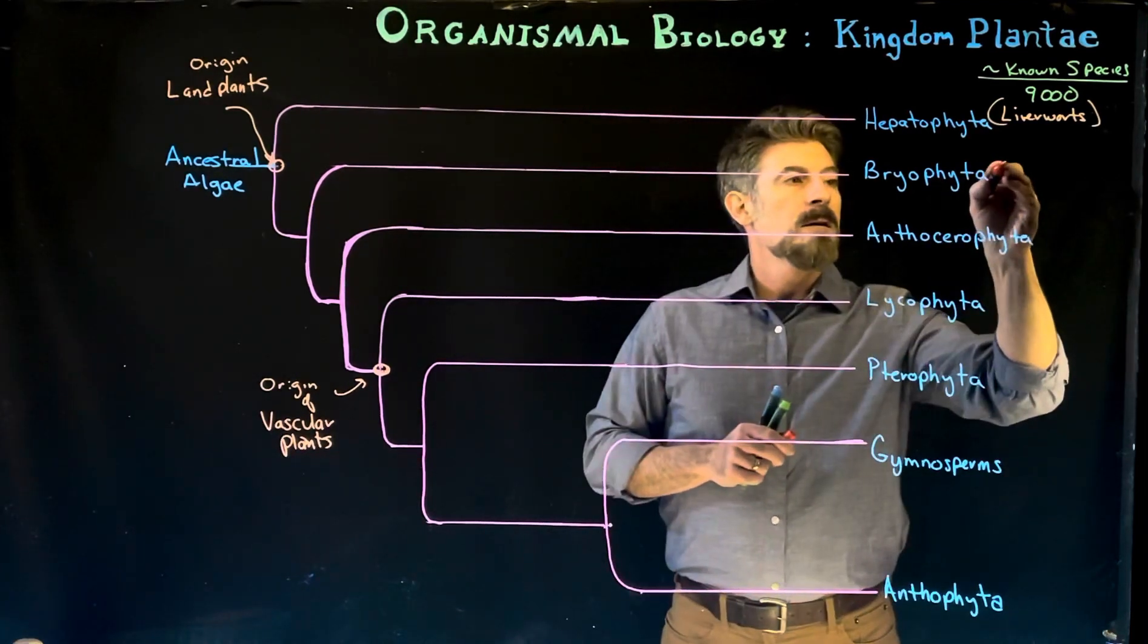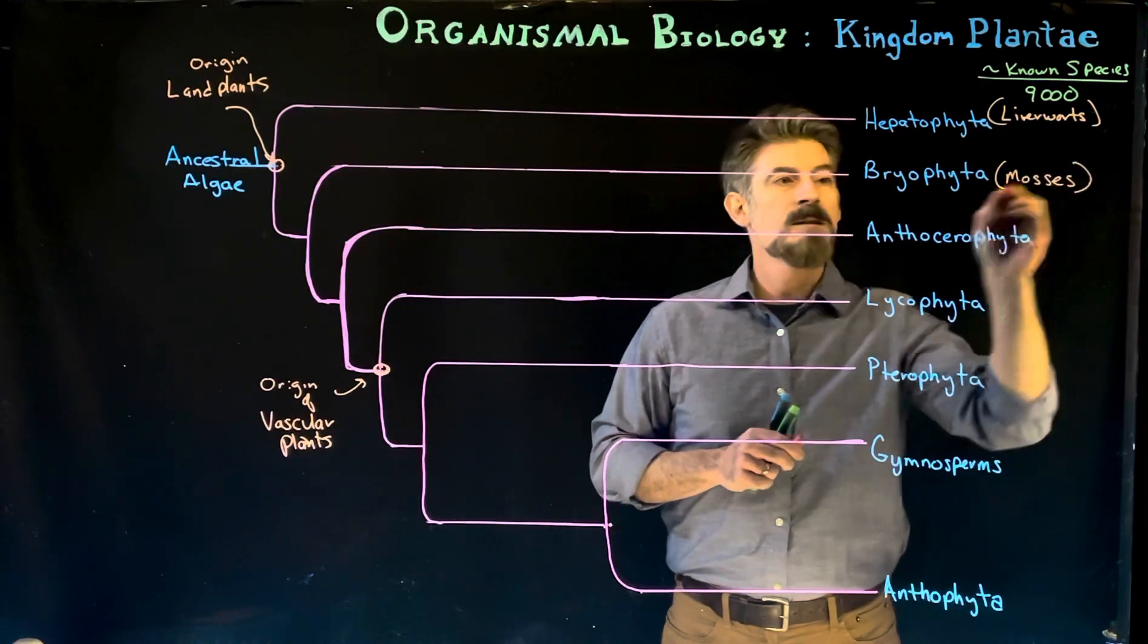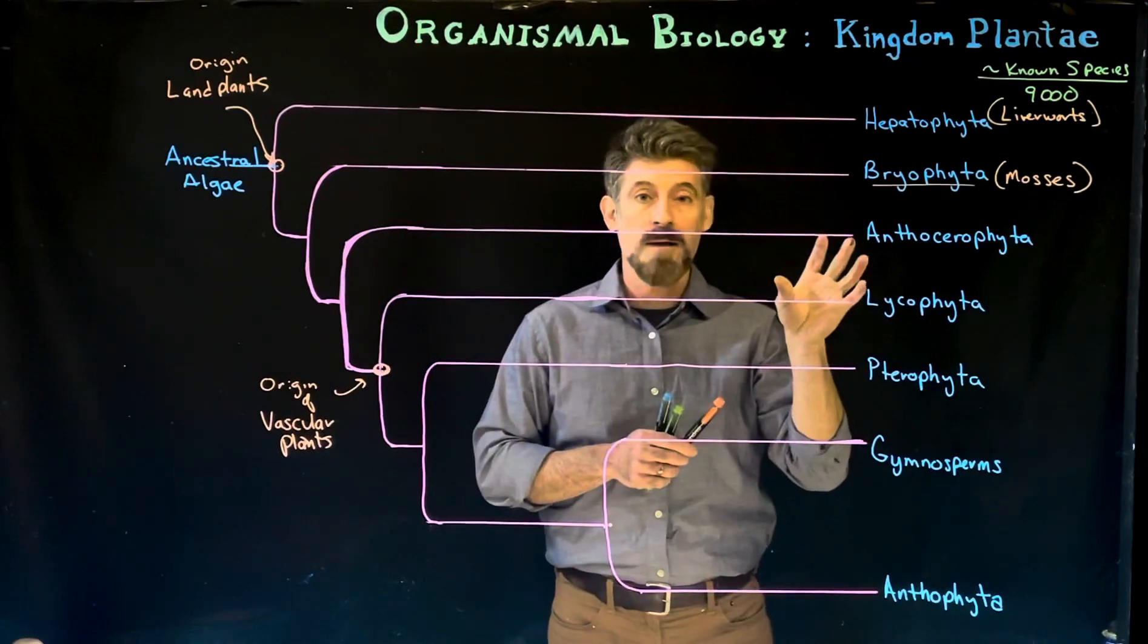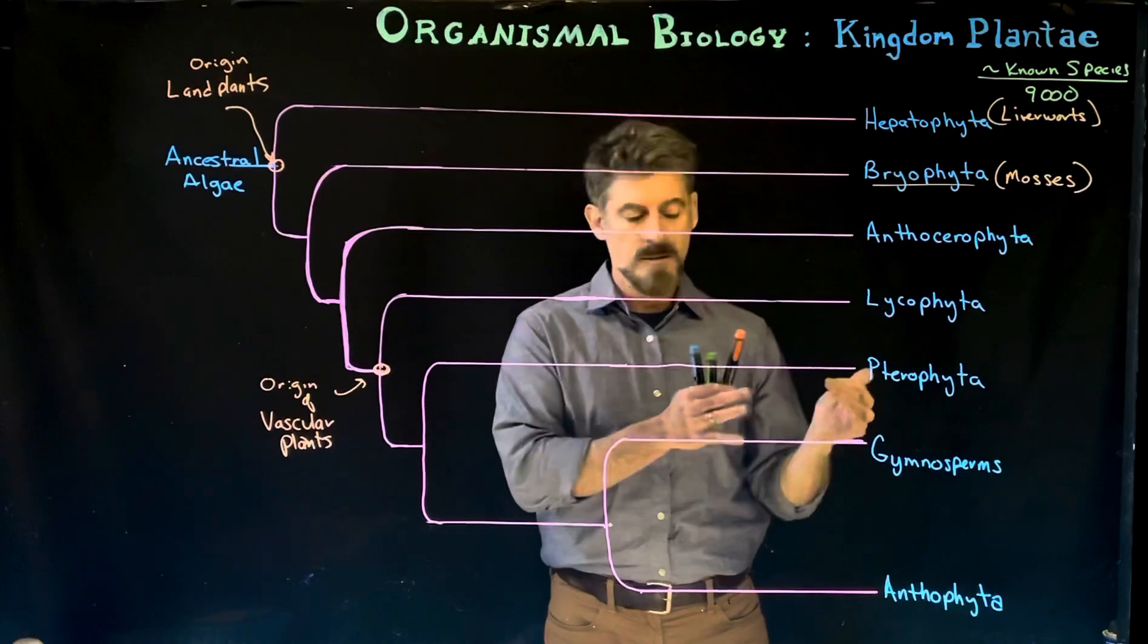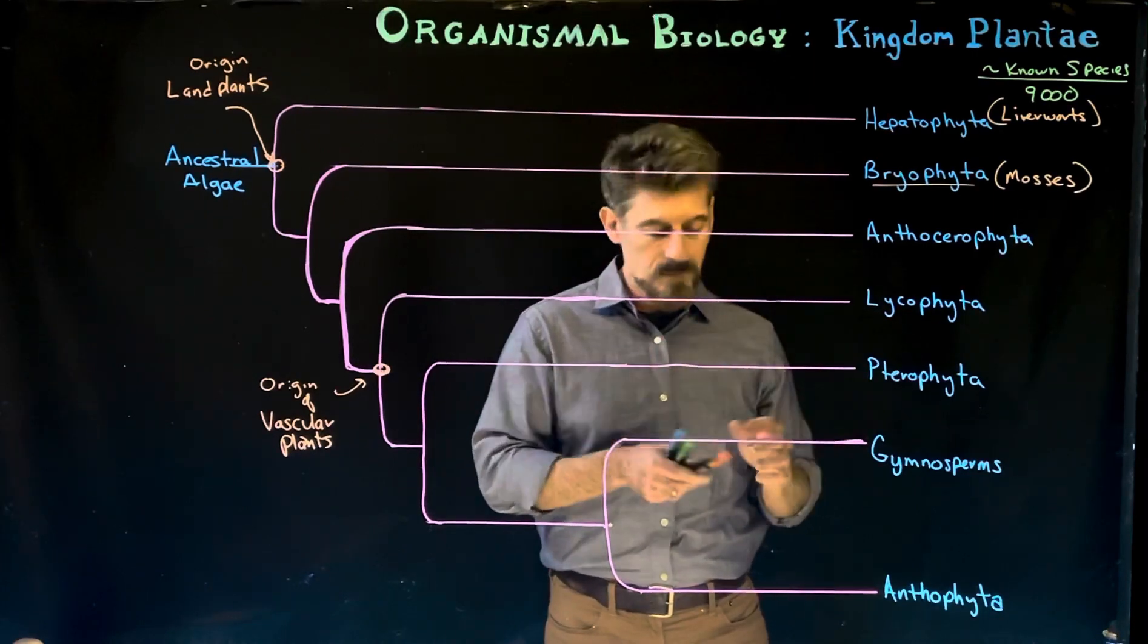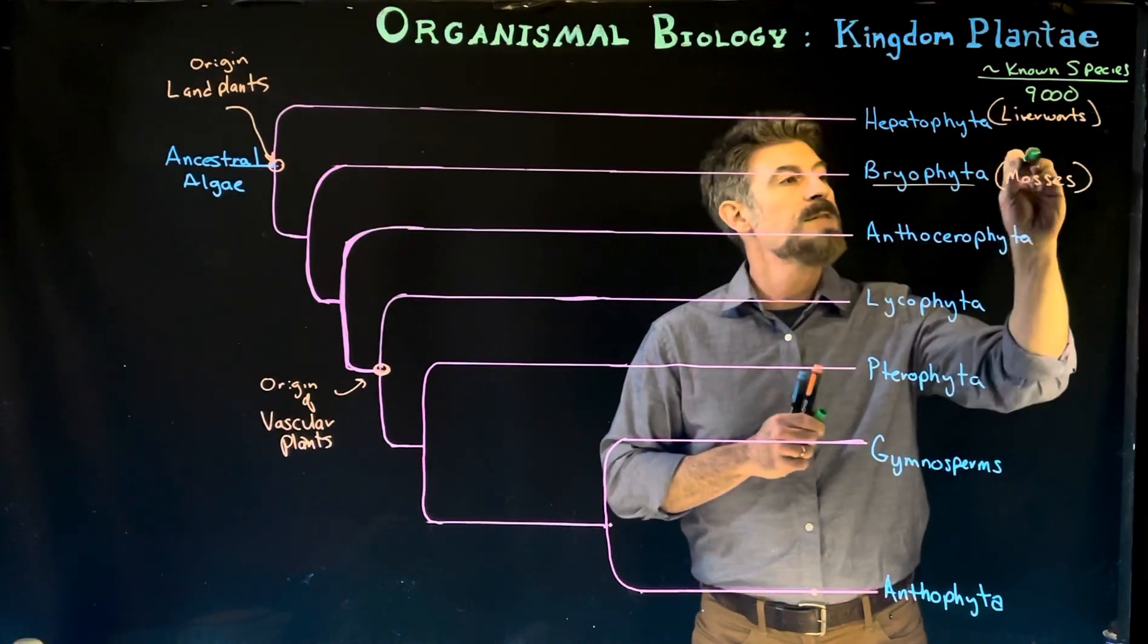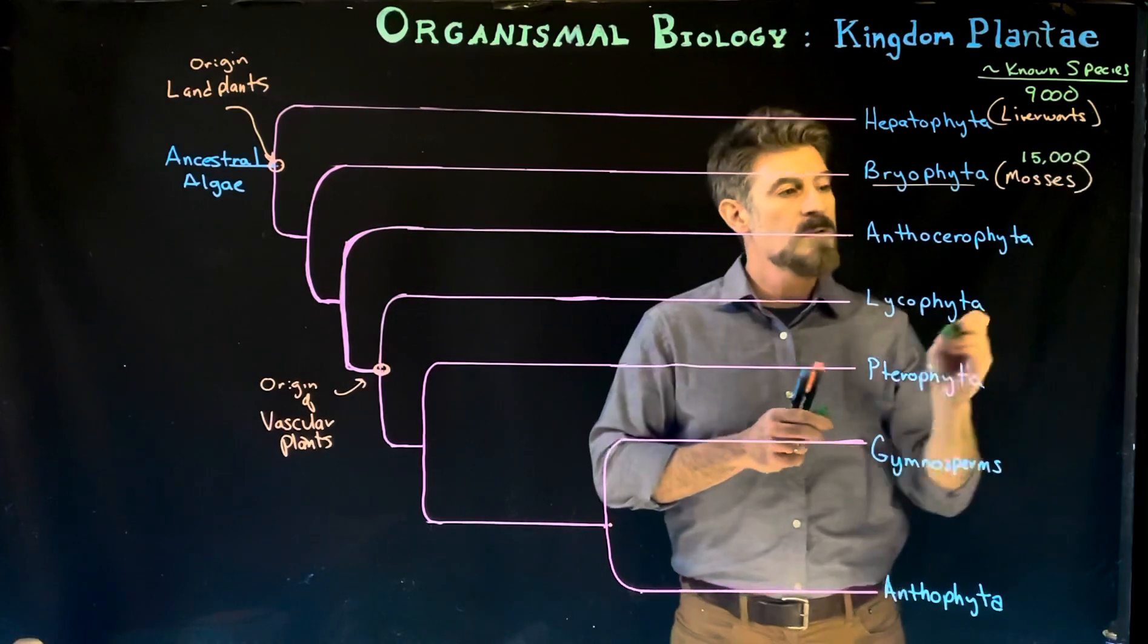The Bryophyta are the group we refer to as mosses. This is the one that we're going to focus in on for the non-vascular plants. So we'll go over the moss life cycle, some of the structures of mosses, their habits, and where they live. Mosses are a little bit bigger group with about 15,000 known species.